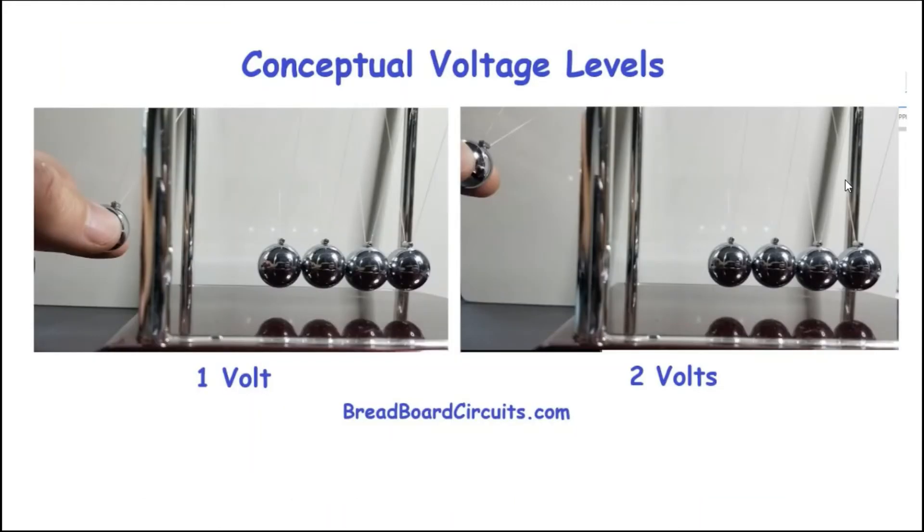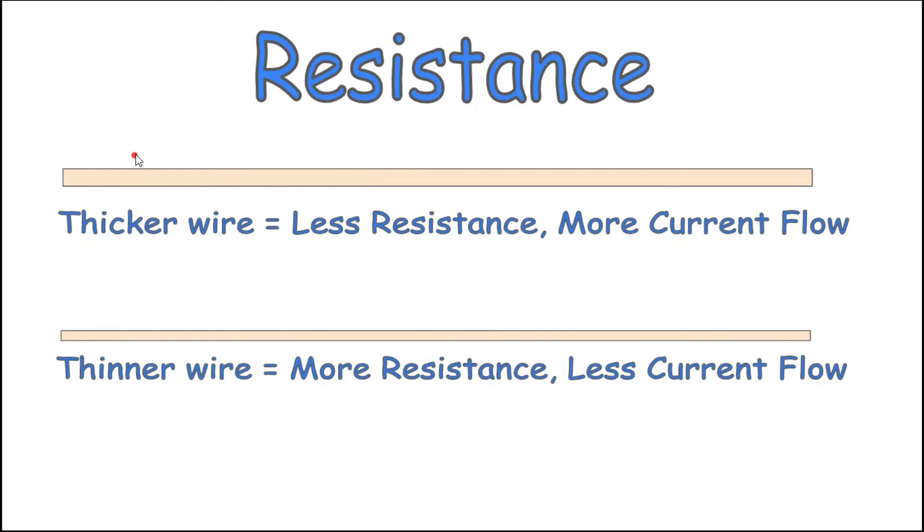What pushes these electrons is voltage. The higher the voltage, the more push there is to displace these electrons and the more electrons flow per second. Think of the height in this scenario as potential energy. The higher the ball in the picture, the higher the voltage and the resulting force there is to push the electrons through the wire.